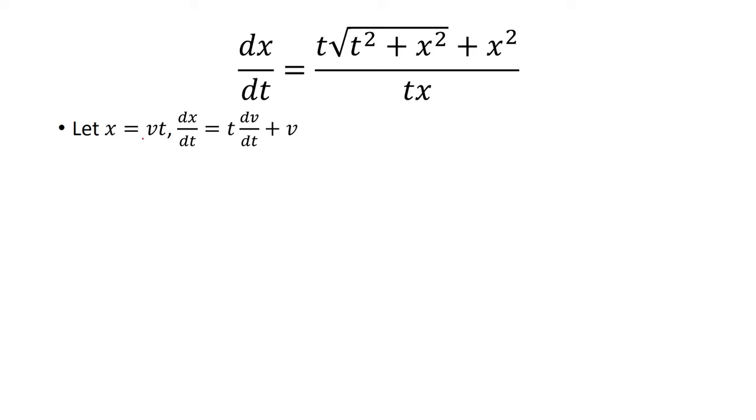So then dx over dt will be the derivative of v with respect to t times t, plus v times the derivative of t. And the derivative of t is just 1. I'm just using the product rule here.